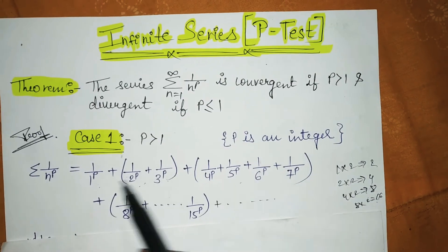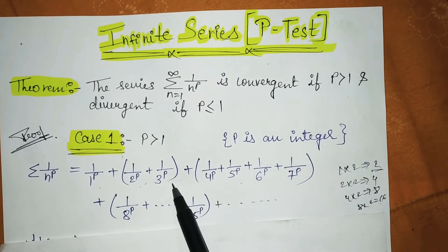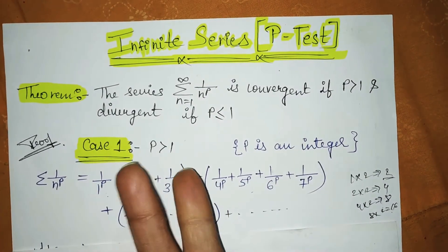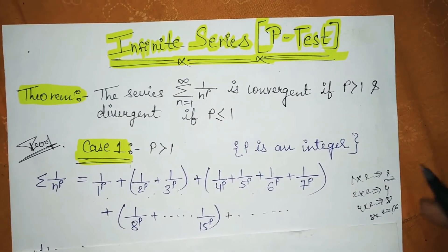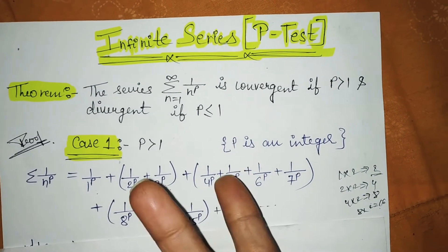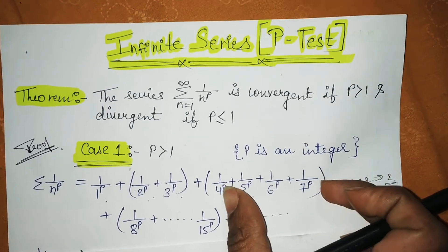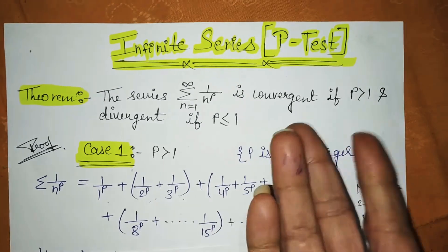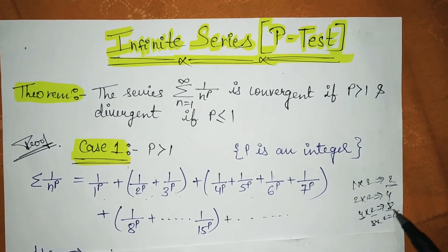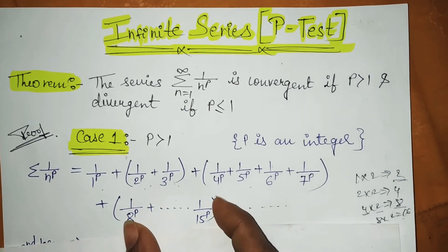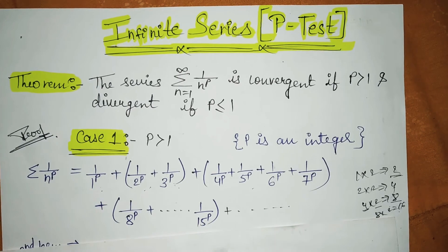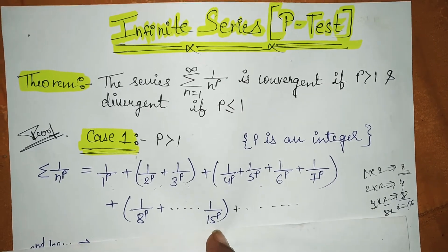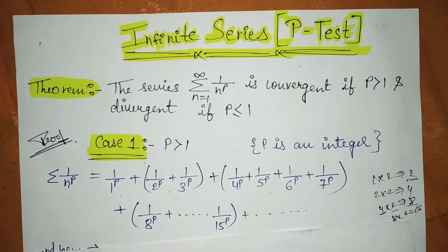So: the first term is 1 upon 1 to the power P. Then from the second term: 1 upon 2 to the power P plus 1 upon 3 to the power P. Now since P is greater than 1, this section uses a less-than-or-equal sign — it's the opposite of the condition. In this case, we look at the smallest term in the group: two to the power P is smallest, so all terms are replaced by two to the power P. Taking LCM, we get 2 upon 2 to the power P, which simplifies to 2 to the power (1-P).